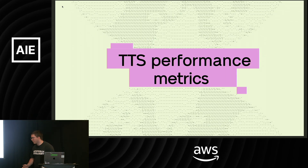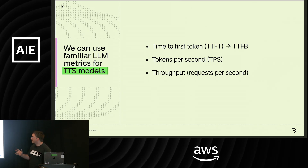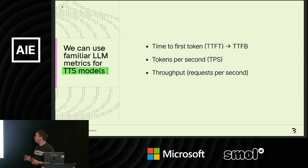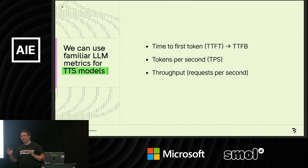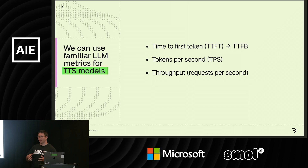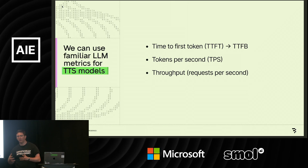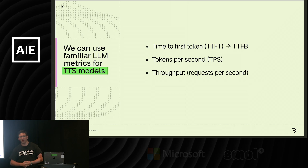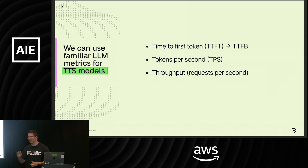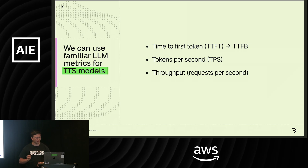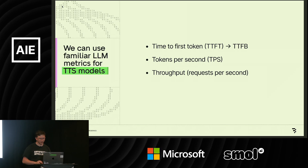On performance metrics — we think about LLM metrics but look at them a little differently. Instead of time to first token, we're talking about time to first byte, or sometimes even time to first sentence, because we need a more useful chunk of output before we feel good about response time. We still think about tokens per second, though differently, and we mostly care about throughput — how many requests we can serve at a given time.